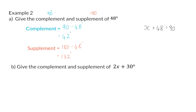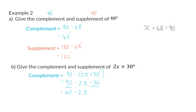Give the complement and the supplement of 2x plus 30. In this case our basic concepts stay the same, but we'll have an abstract answer because of the variable. To determine the complement, we take 90 degrees and subtract the given angle, putting it in brackets because we need to subtract more than one term. So we subtract 2x and subtract 30 degrees: 90 minus 30 gives a final complement of 60 degrees minus 2x. To determine the supplement, we take 180 degrees and subtract the angle in brackets: 180 minus 2x minus 30, which gives us 150 minus 2x.